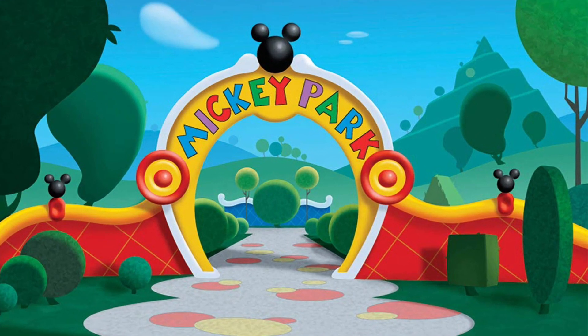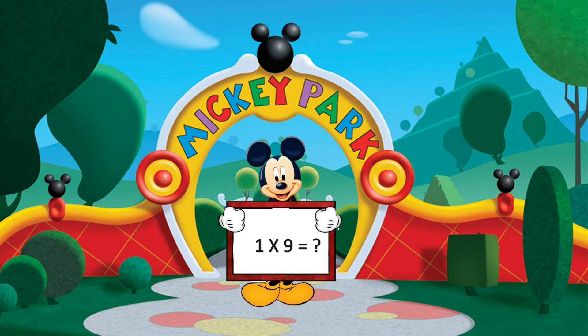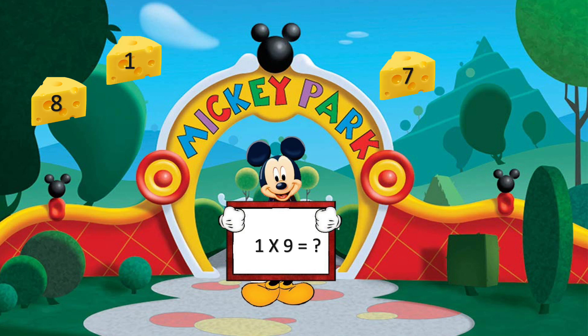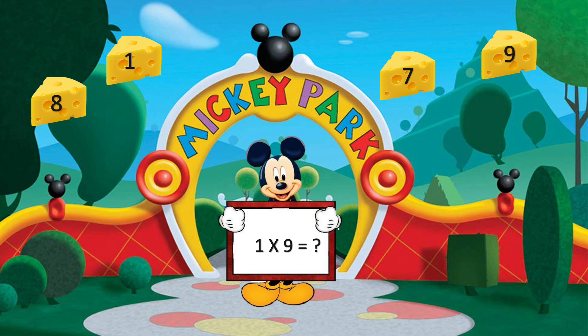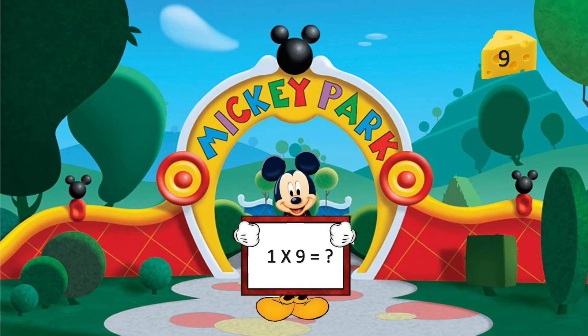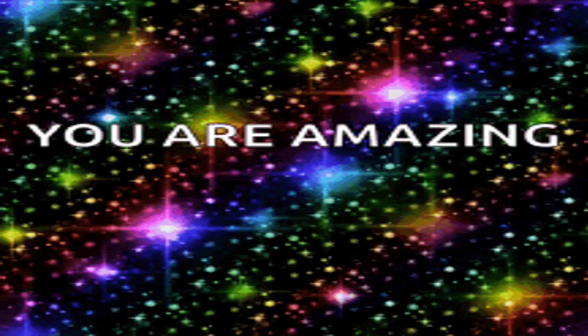So guys, who likes Minnie Mouse and Mickey Mouse? And what do mice eat? Cheese! So the options will be cheese, and the board will be about Mickey Mouse. The question is: what is 1 into 9? The options are 8 cheese, 1 cheese, 7 cheese, and 9 cheese. Time starts now. Time is up. The correct answer is 9 cheese. You are amazing!